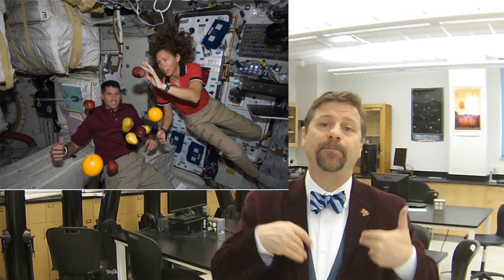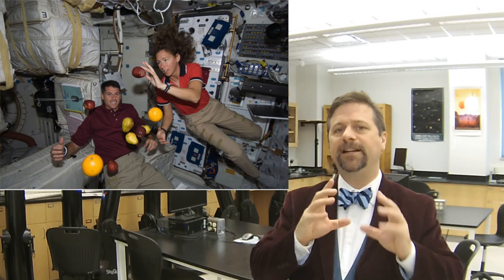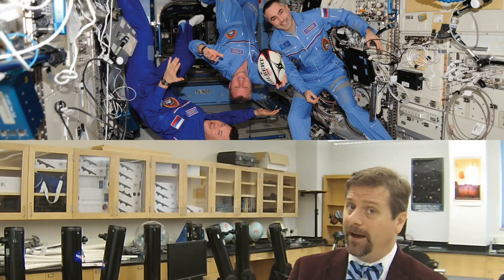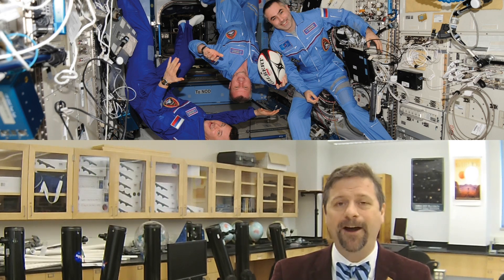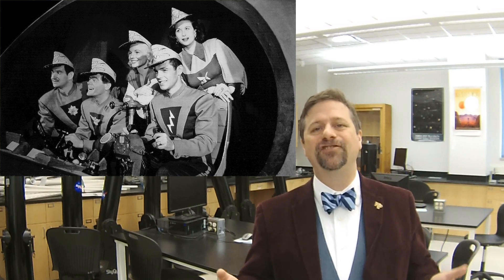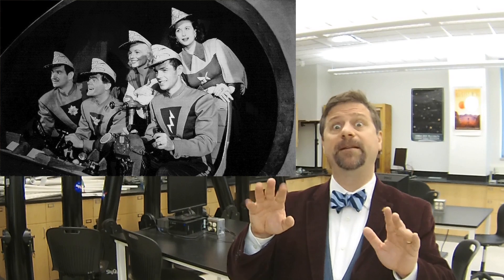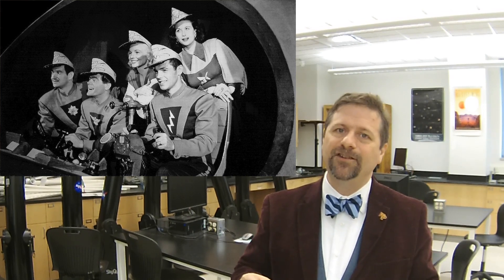People on board the International Space Station are floating, they appear to be weightless. How is that different than if we put the ISS way out in deep space where there is no gravitational influence? They would float. There's nothing to hold them to the ground. In reality, if you send a spaceship halfway to the next star, everyone would float around. There would be no such thing as down or up.